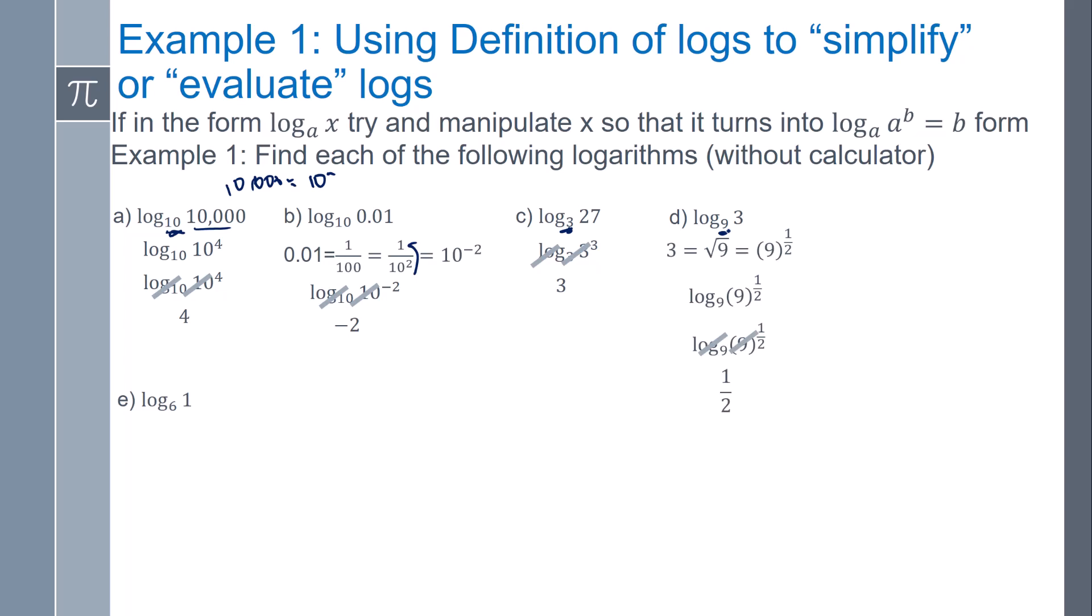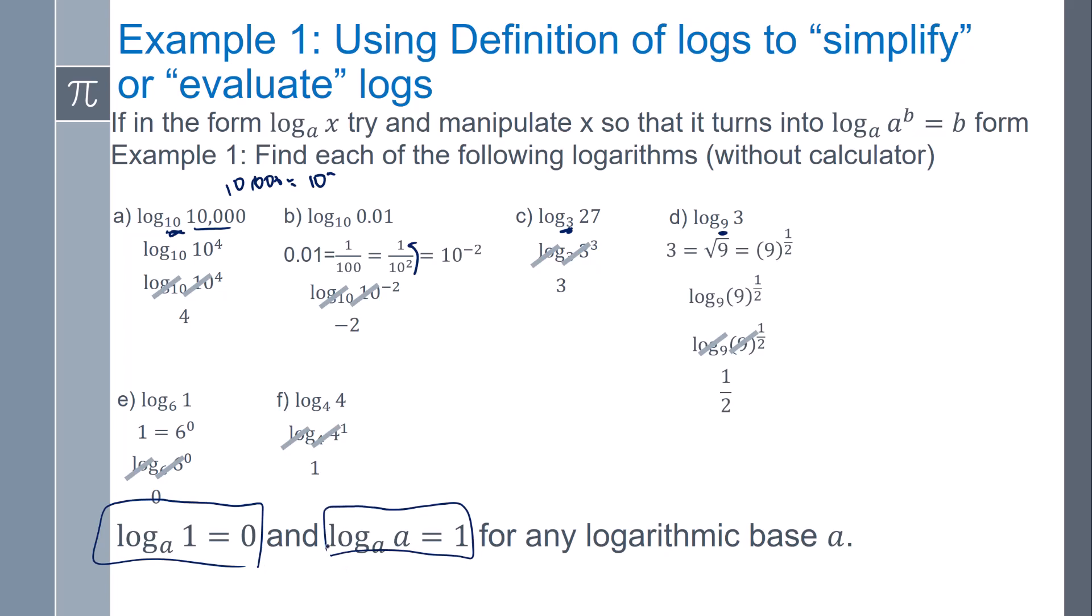Log base 6 of 1. What power do I need to raise 6 to get me 1? Well, 1 is the same as 6 to the 0 power. Anything to the 0 power is 1, and so now the log base 6 and the 6 cancel out, and so we're left with 0. And then what power do I need to raise 4 to get me 4? That's going to be 1. So just as a note to remember, log base anything of 1 equals 0, and then if the numbers match, it's always going to simplify to 1.